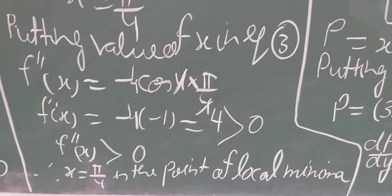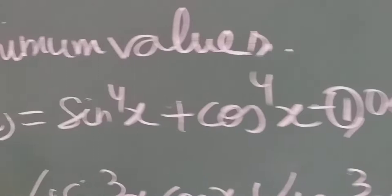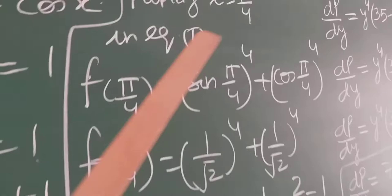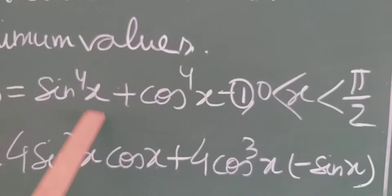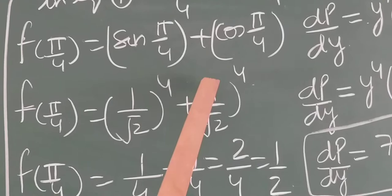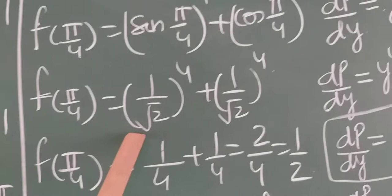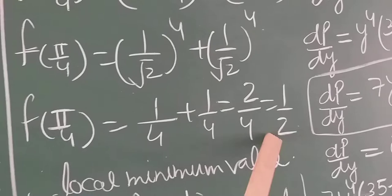Now we have to find the local minimum value by putting x = π/4 into equation 1. f(π/4) = (sin(π/4))⁴ + (cos(π/4))⁴ = (1/√2)⁴ + (1/√2)⁴ = 1/4 + 1/4 = 2/4 = 1/2. So the local minimum value of the function is 1/2.